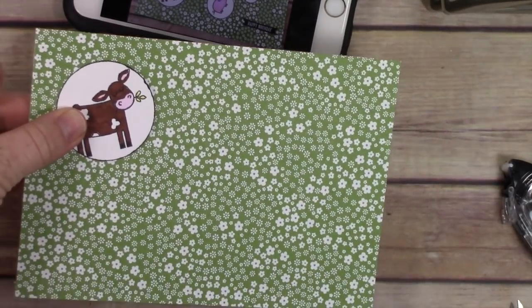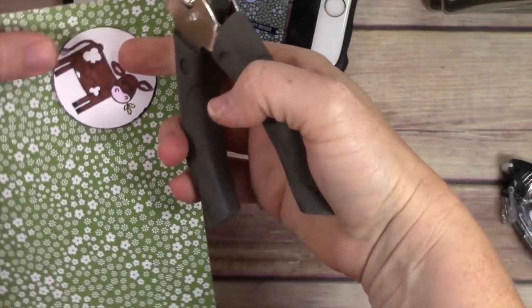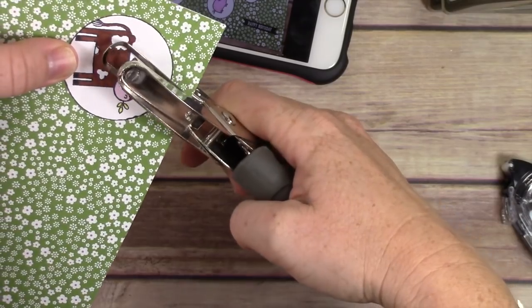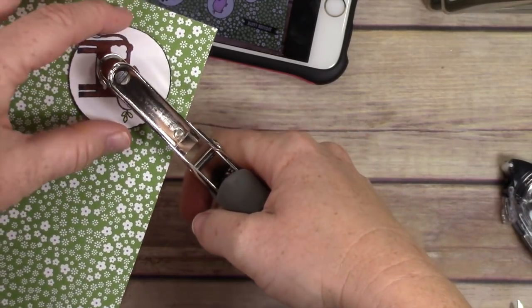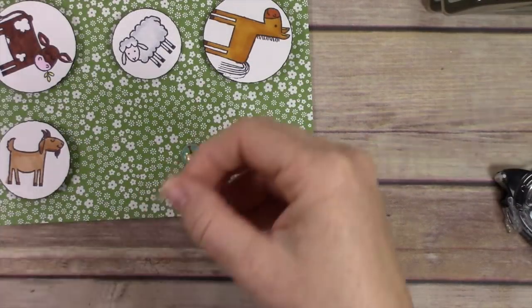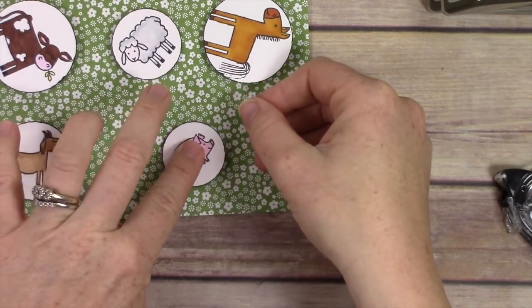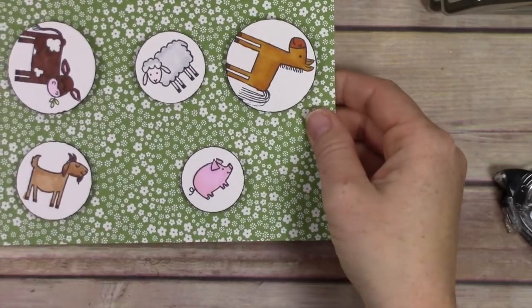I'm removing the little animals before I punch, and I punched all those holes. Now I'm adding brads through the holes, and these little guys will spin.